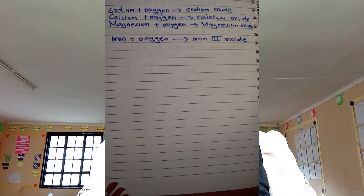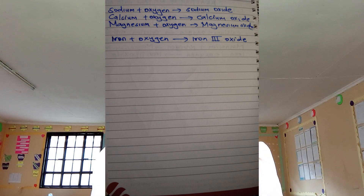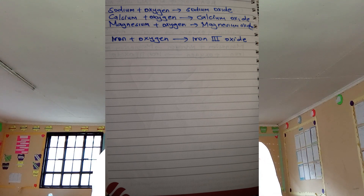Now, how do substances burn in air in the presence of oxygen gas? If you burn metals — for example, sodium metal in the presence of oxygen — it gives you sodium oxide. Sodium plus oxygen gives sodium oxide. Calcium metal plus oxygen gives calcium oxide. Magnesium plus oxygen gives magnesium oxide.